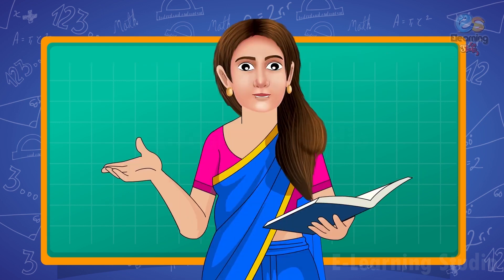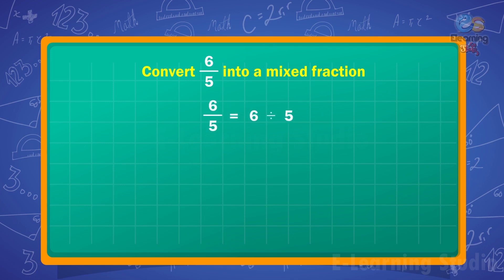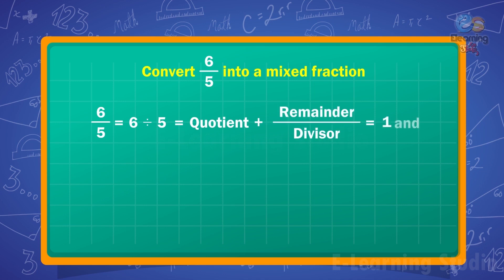Let's understand with the help of some examples. Convert 6 upon 5, which is an improper fraction, into a mixed fraction. Children, we know that 6 upon 5 can be represented as 6 divided by 5. Divide 6 by 5. We get one whole and what is left is 1 upon 5. That is, 6 upon 5 is equal to 6 divided by 5, which equals quotient plus remainder upon divisor, which equals 1 and 1 upon 5.